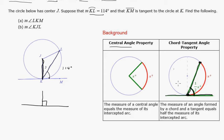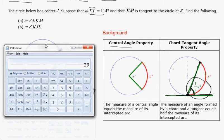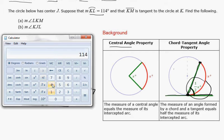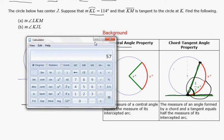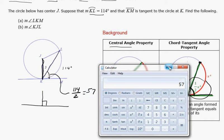So remember over here, if we know the arc, then this chord tangent angle is half. So this angle right here is half. And half of that, let's see, that would be, I think that's 57. Let's just do it on the calculator. 114 divided by 2, 57. So that's nice.